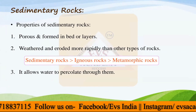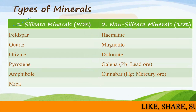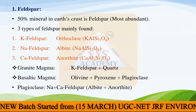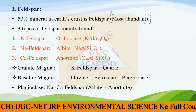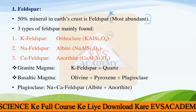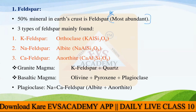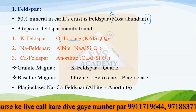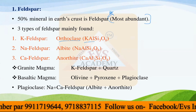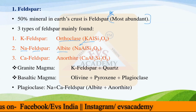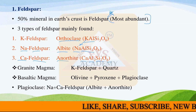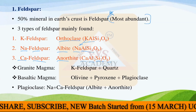The first silicate mineral to discuss is feldspar, which makes up 50% of all minerals in the earth's crust and is the most abundant mineral there. Feldspar is divided into three main types: potassium feldspar (orthoclase), with formula KAlSi3O8; sodium feldspar (albite), with formula NaAlSi3O8; and calcium feldspar (anorthite), with formula CaAl2Si2O8. These are the three main types of feldspar found in the earth's crust.